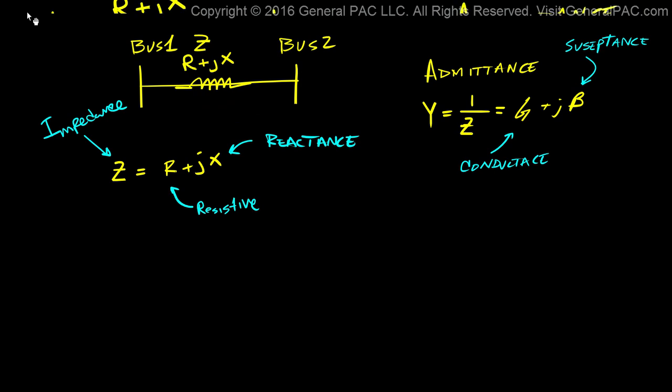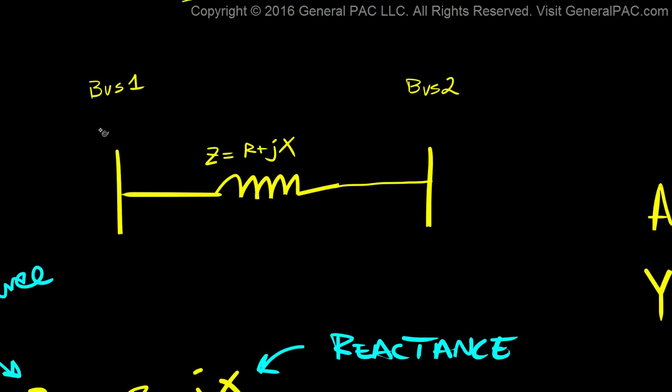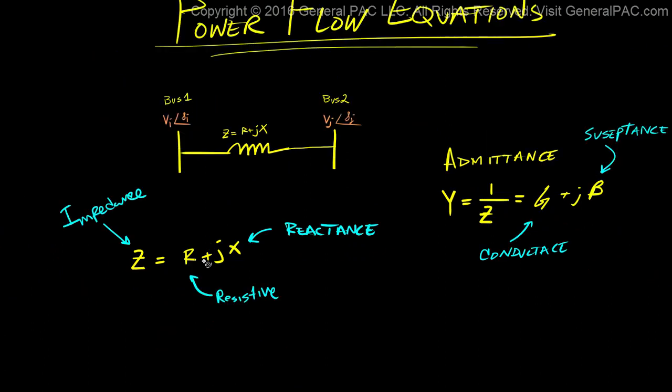So next let's talk about the voltages. So the voltage on bus 1 we'll call it vi at some angle tilde i. And the voltage on bus 2 we'll call that voltage vj at angle tilde j. So we have two different voltages. The voltage on bus 1 and the voltage on bus 2.